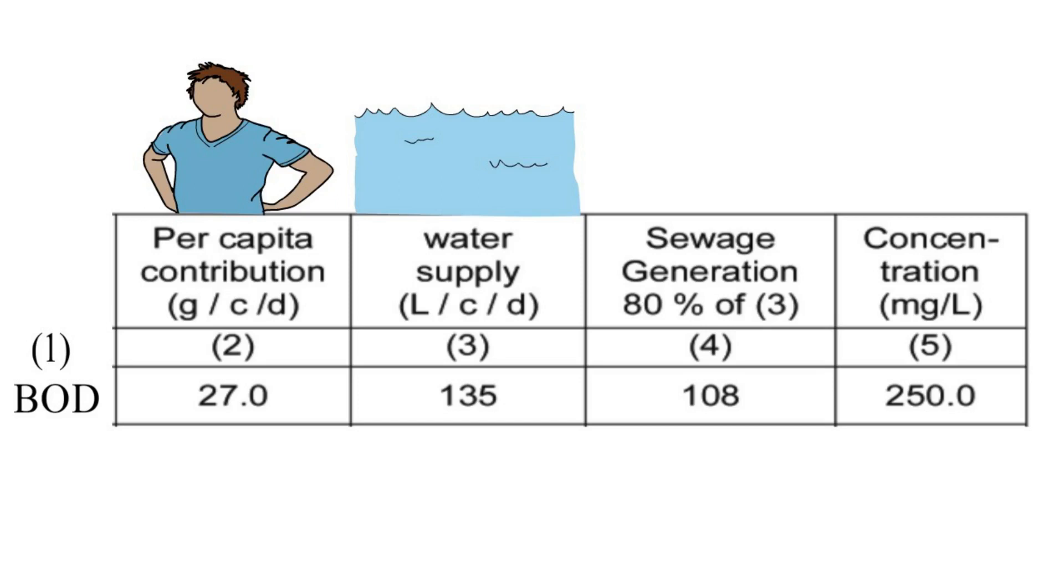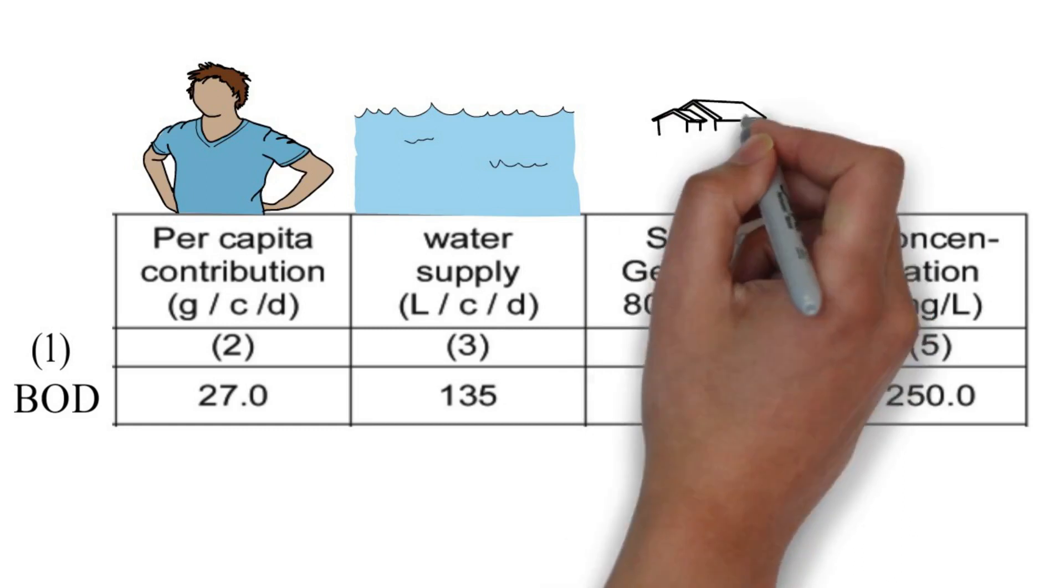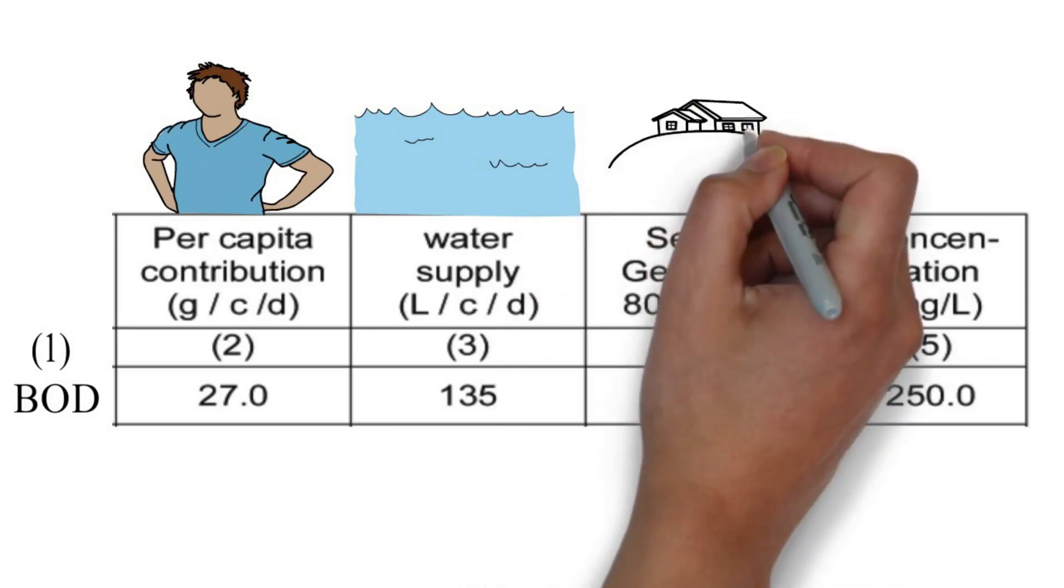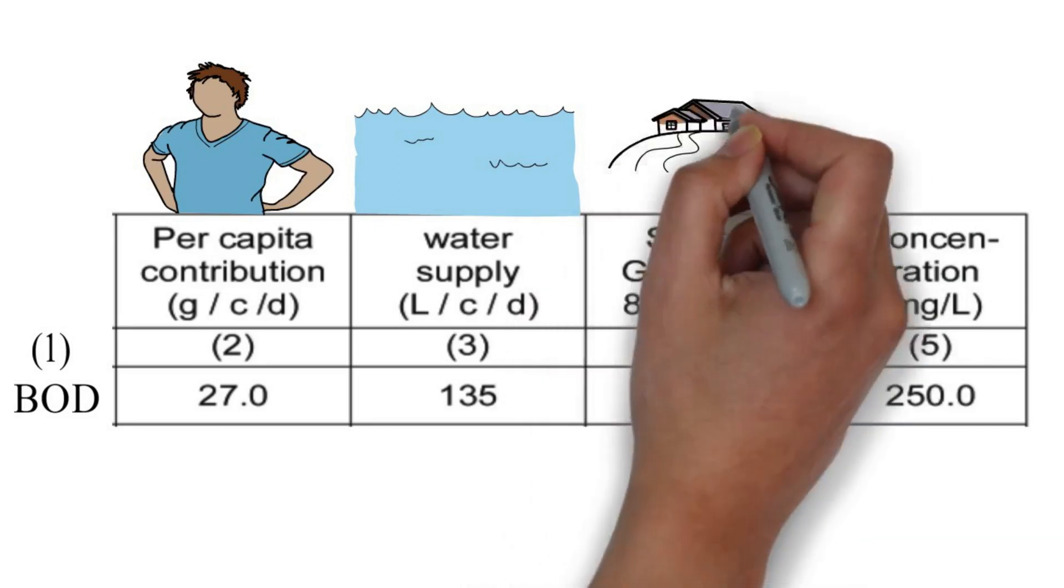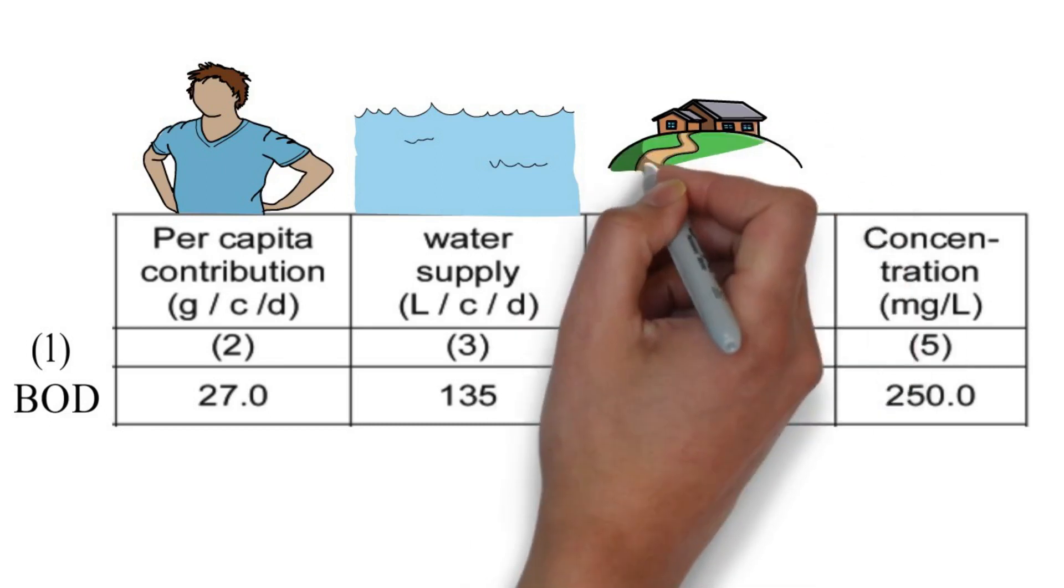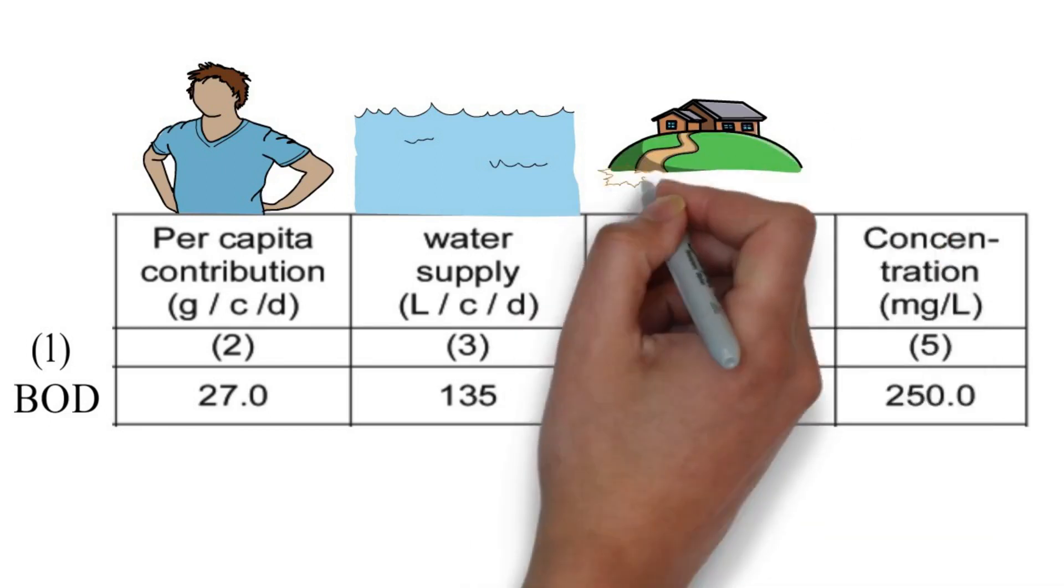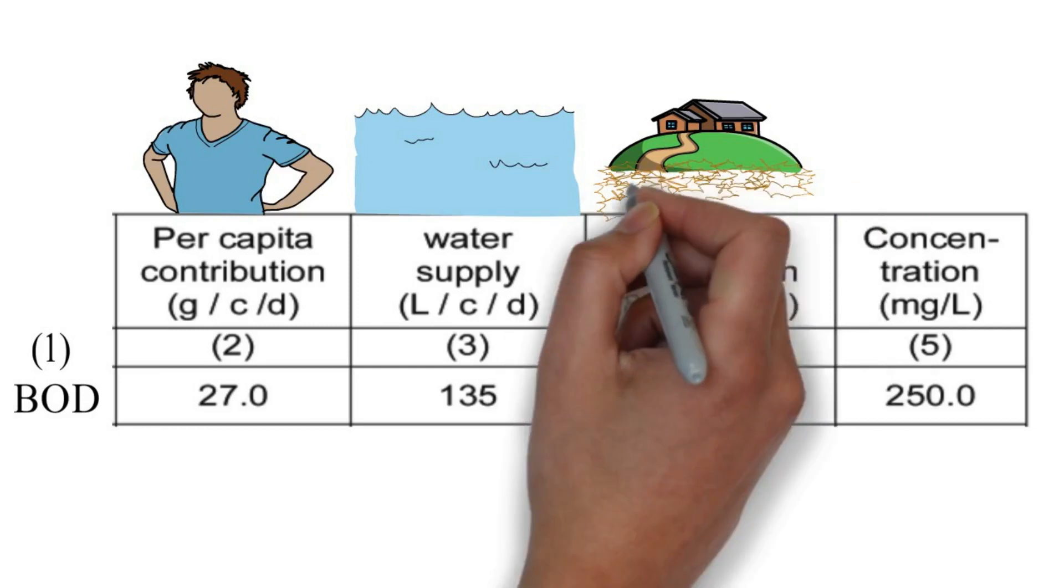When this water is used, then approximately 80% out of the supplied water goes into the sewage. Therefore, 80% of 135 litre water supply is 108 litre of sewage.